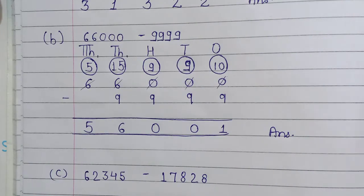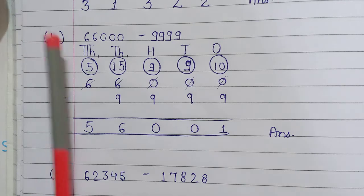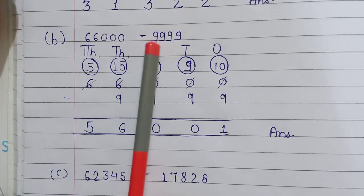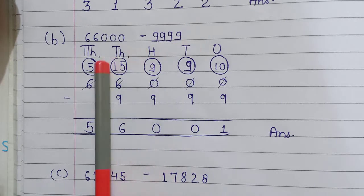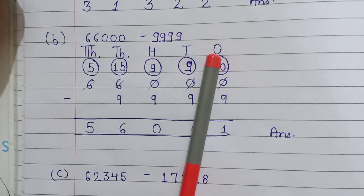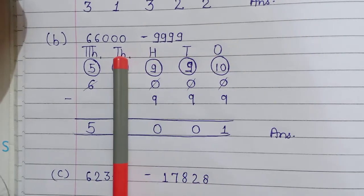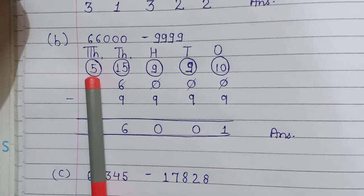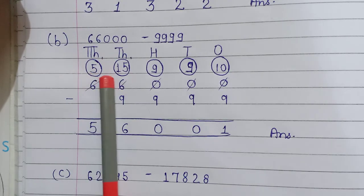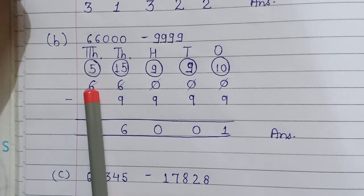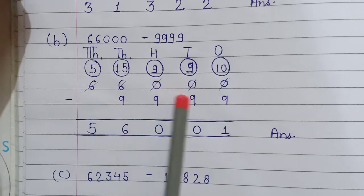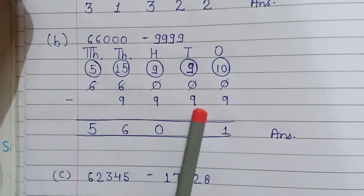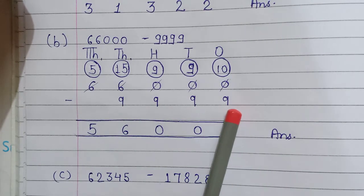Next question: 66,000 minus 9,999. Again, write the places: ones, tens, hundreds, thousands, and ten thousands. Write circles for carry. Then write the question: 66,000 minus 9,999. Now subtract them.